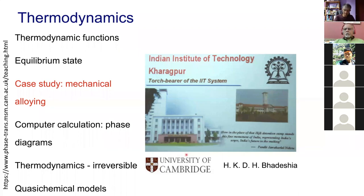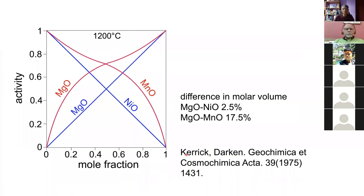This slide illustrates an ideal solution. We are plotting activity versus mole fraction. Activity is like an effective concentration — by adding something else, you might make the solvent molecules more agitated and therefore more active than in proportion to concentration. I found a paper showing that a magnesium oxide and nickel oxide solution demonstrates ideal behavior, where activity equals mole fraction, as opposed to magnesium oxide-manganese oxide where activity is greater than concentration.